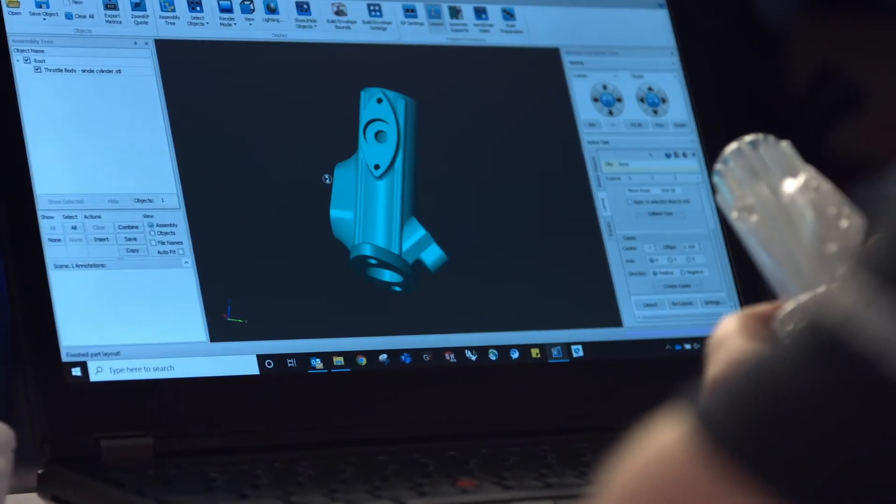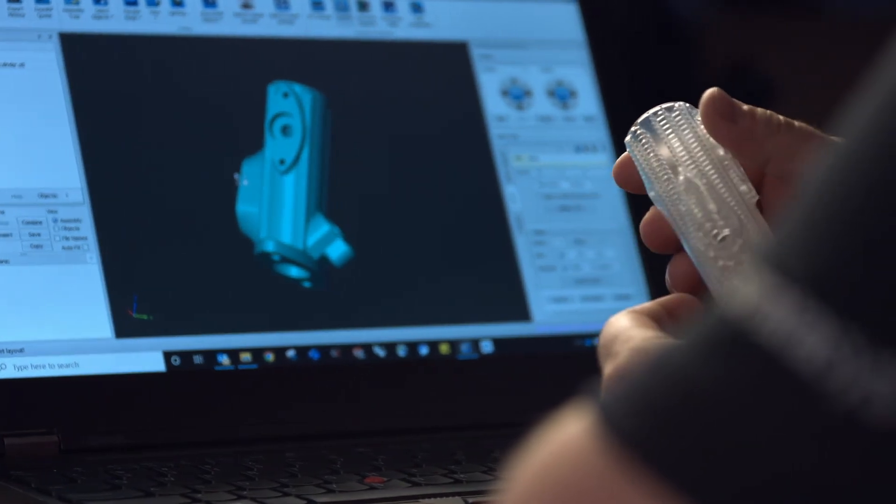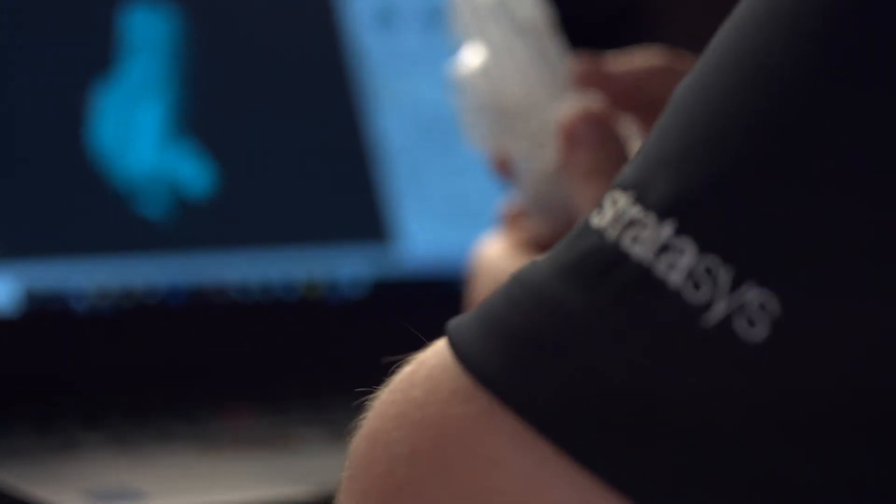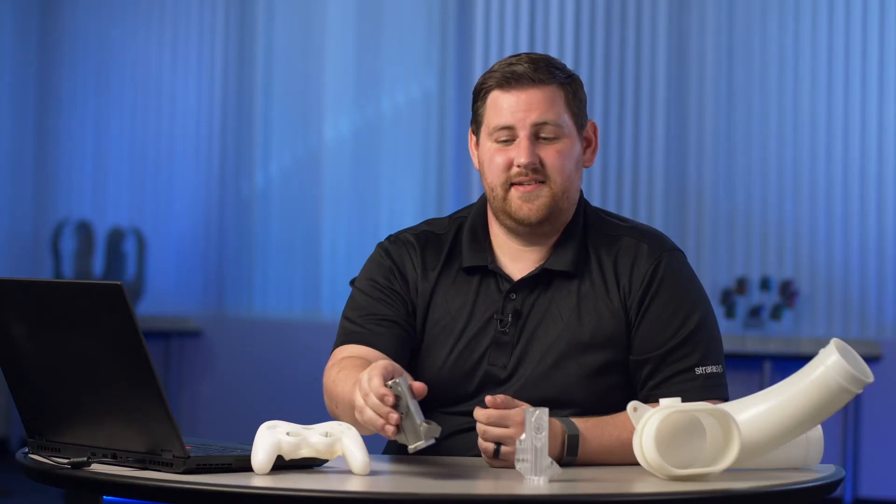By using additive manufacturing with stereolithography to create these patterns, you not only have the freedom of the molding process, but you have the freedom of the design process as well. So if you need a final metal part, you can use the V650 to get there faster and more economically.